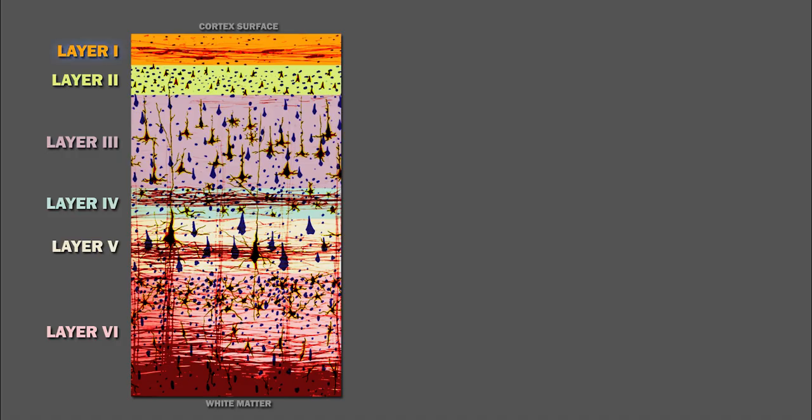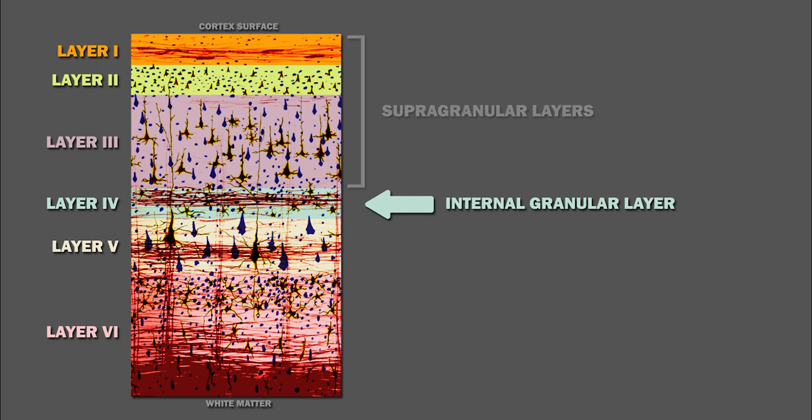Now let's cover the layers. Layer 1 is closest to the outer surface, and layer 6 is just above the white matter. The layers above layer 4, the internal granular layer, are called the supragranular layers, while the layers below are called the infragranular layers.